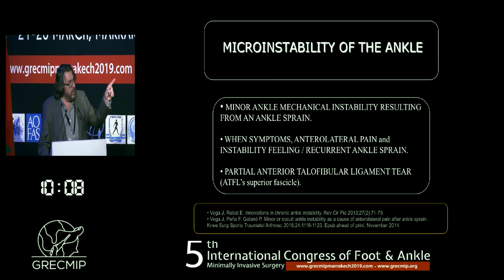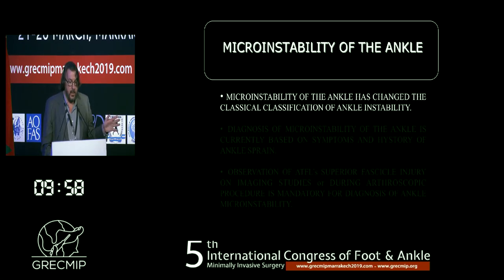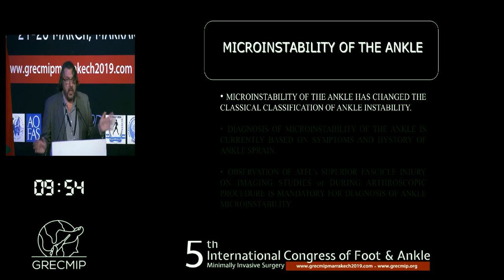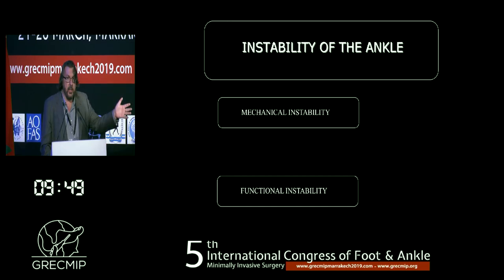The anterior talofibular ligament tear — tear of this specific structure — is the problem. How can we detect this? We have changed our classical classification of ankle instability. You can see this is the mechanical instability and functional instability.